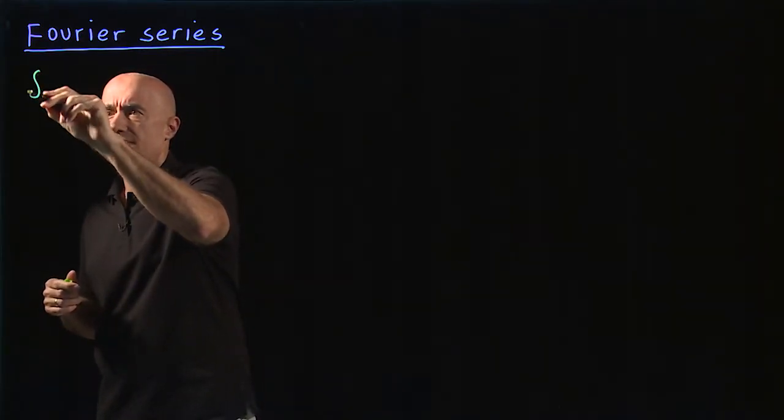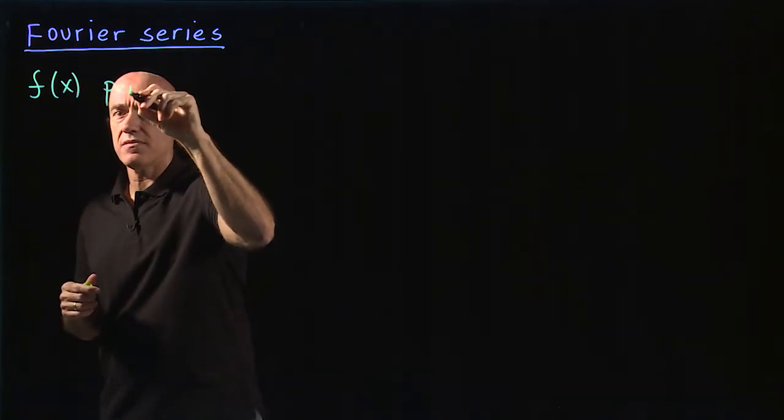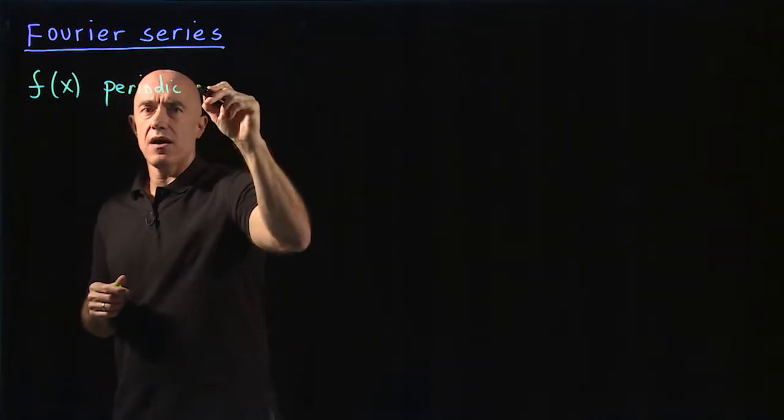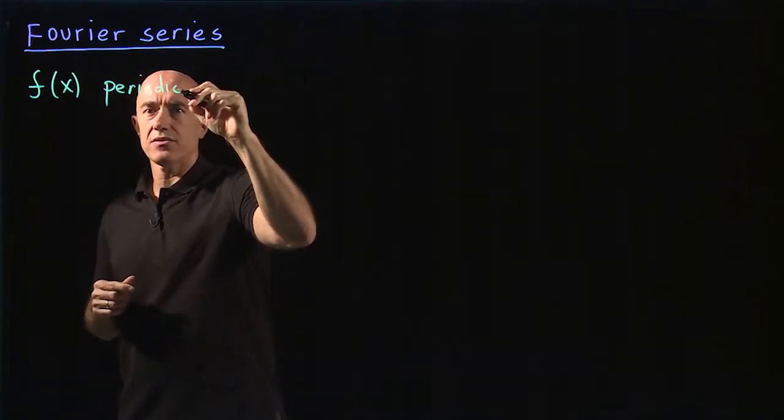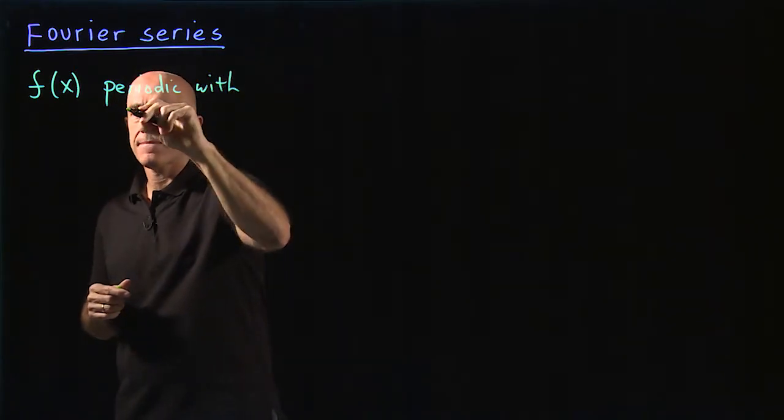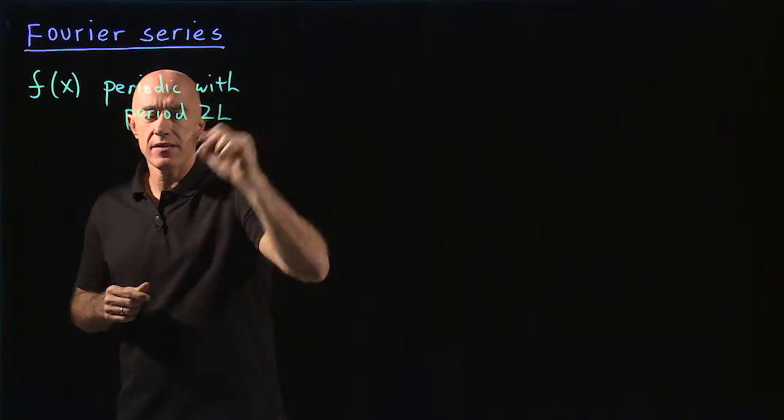So what is a Fourier series? It's a way of representing a function. Here we're going to have a function f of x, which is supposed to be a periodic function, means it repeats itself every 2L. So periodic with period 2L.